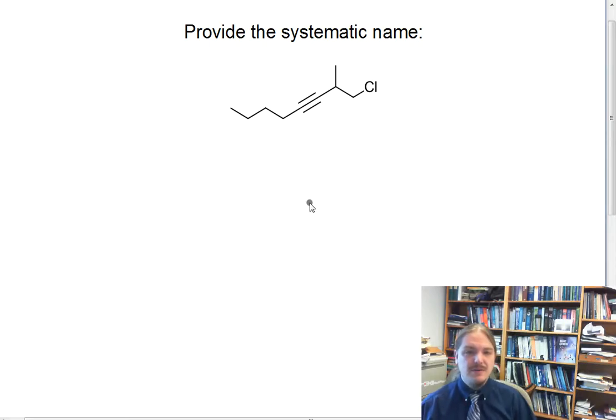In this video, we're going to do a couple of practice problems on the nomenclature of alkynes. We're going to start with this problem where we're asked to provide the systematic name for this molecule that contains an alkyne functional group. The first thing we need to do is identify the parent chain.